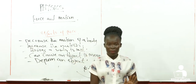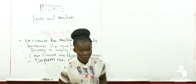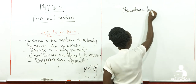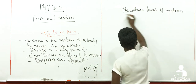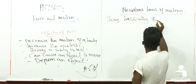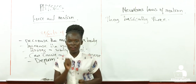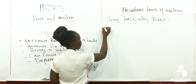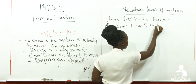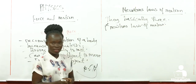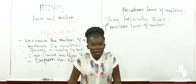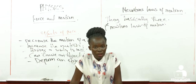So, he summarized them into three laws — Newton's Laws of Motion — and there are basically three of them. We are going to start from the first law. Newton's first law of motion states that a body continues in its state of rest or uniform motion in a straight line unless it is acted upon by an external force.